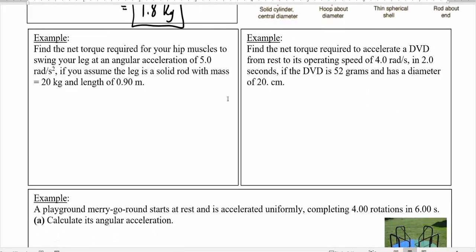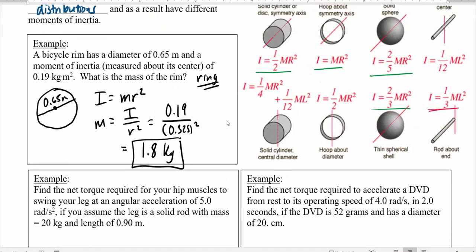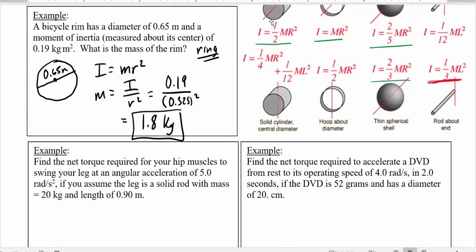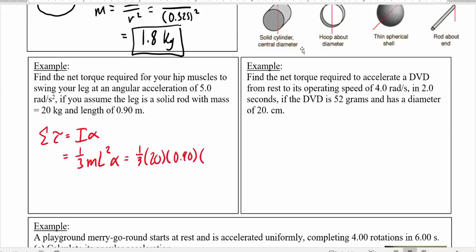Find the net torque required for your hip muscles to swing your leg at an angular acceleration of 5 radians per second squared, assuming the leg is a solid rod with a mass of 20 kilograms and length of 0.9 meters. The moment of inertia for a rod rotating about its end is one-third mL². So the sum of all torques equals I times alpha, which equals one-third times 20 times 0.90² times 5, giving a total torque of approximately 41 newton-meters.